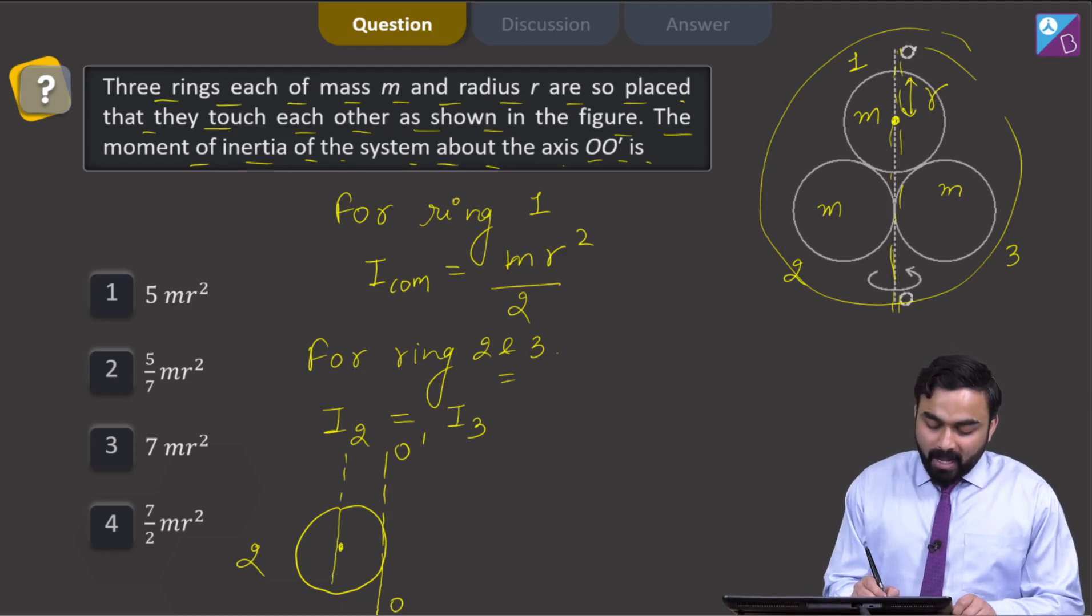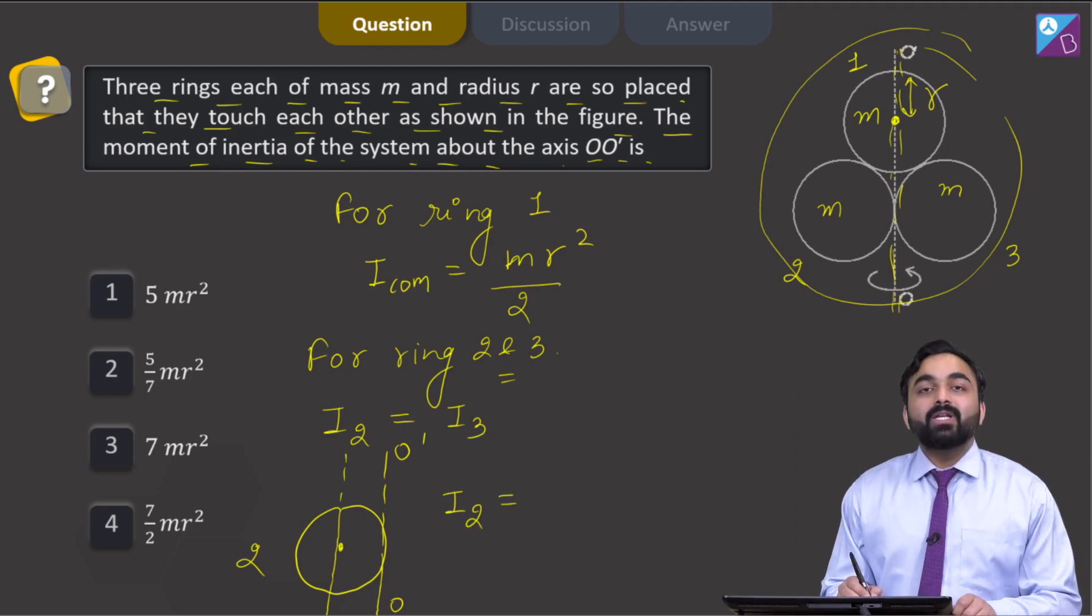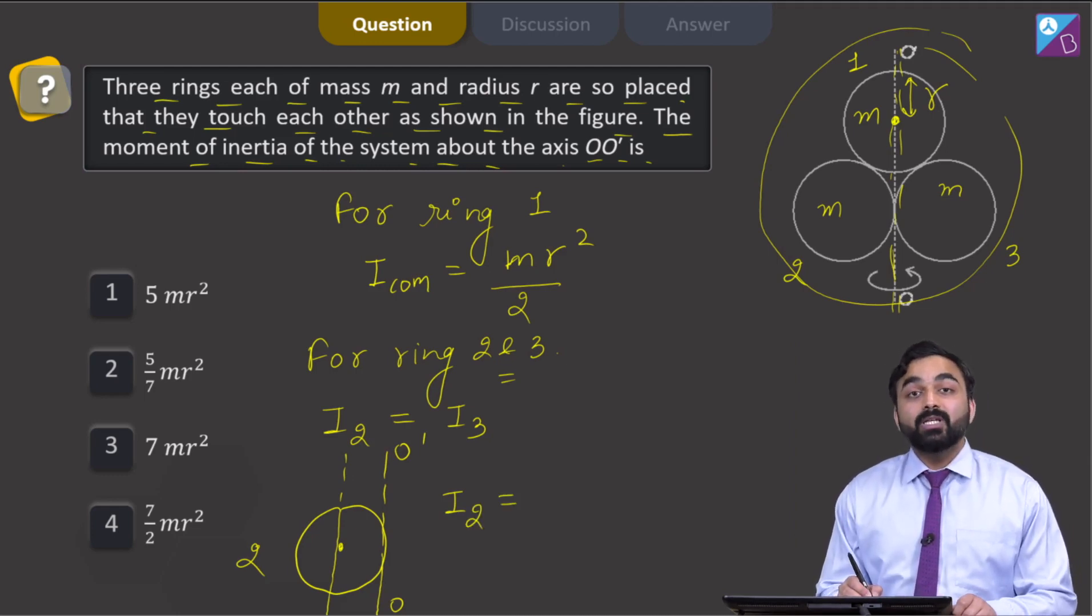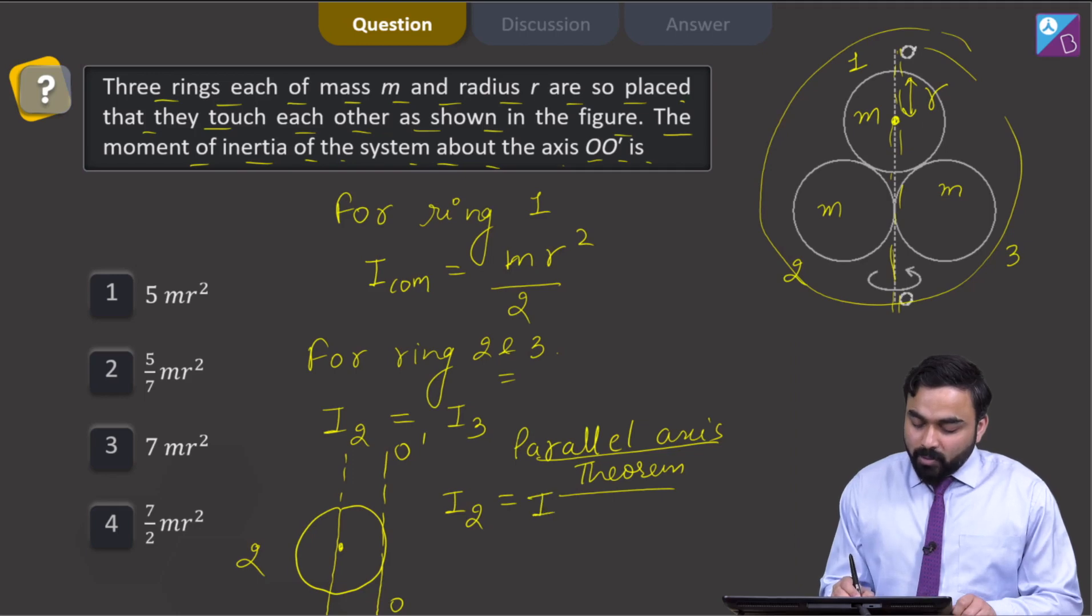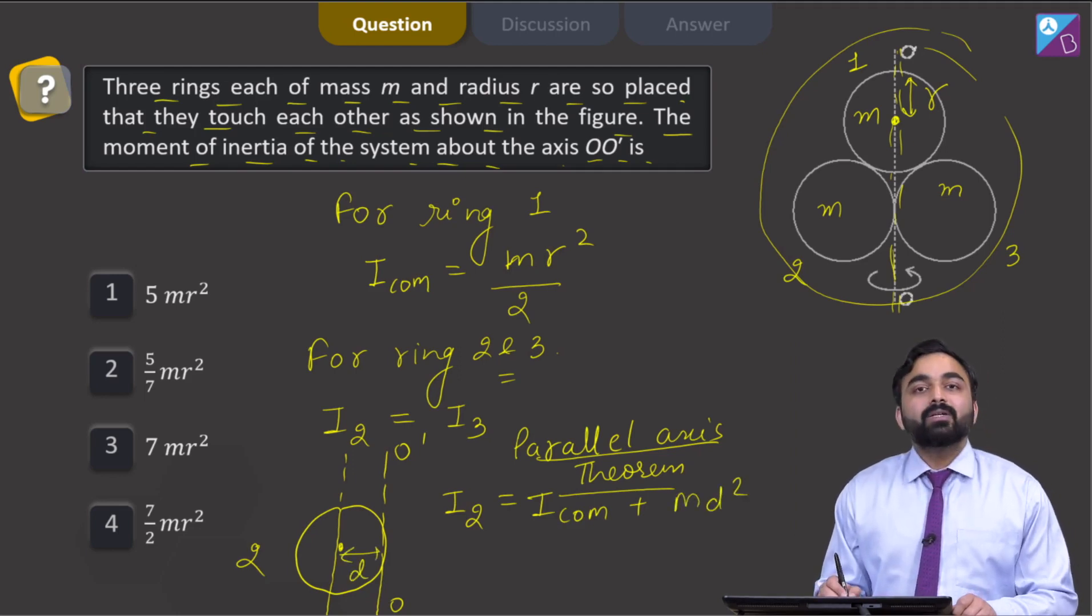I know that for ring number 2, the moment of inertia can be calculated using the parallel axis theorem. By the parallel axis theorem, I can write I₂ = I_cm + md², where d is the distance from the center of mass to the axis.